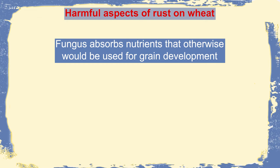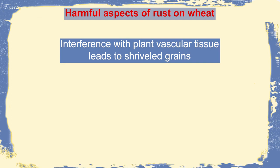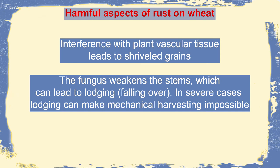There are different harmful aspects of rust on wheat. The fungus absorbs nutrients that otherwise would be used for grain development, so the fungus is sharing the nutrient availability with the host plant. The typical symptoms, which include pustules, break through the epidermis and disrupt the plant's control of transpiration, leading to desiccation and infection by other fungi because the upper layer is lost. There will also be interference with the plant vascular tissue, which will lead to shriveling of grains. And because the fungus enters through the root or goes above the stem, it can lead to lodging or falling over of the plant, because the stem becomes weak.